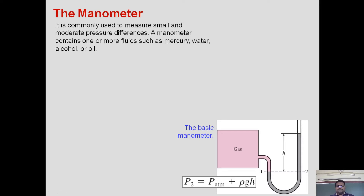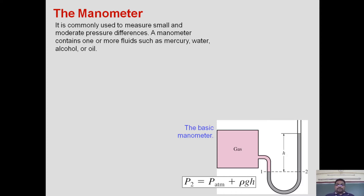If I want to measure the pressure of a gas, I open the valve and allow the gas to flow. In this U-tube, a manometric fluid is filled — we usually use mercury, water, alcohol, or oil. The moment I open the valve, my gas will flow and cause the manometric fluid to rise in the U-tube. The height by which the fluid rises is called the datum, and using that datum I can find out the pressure exerted by the gas.